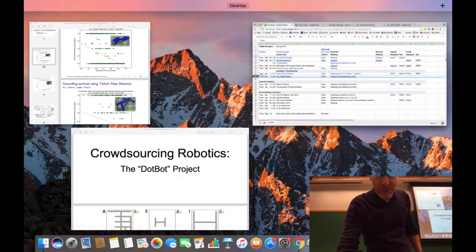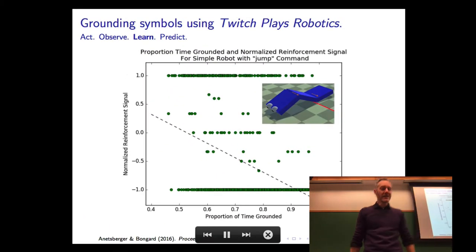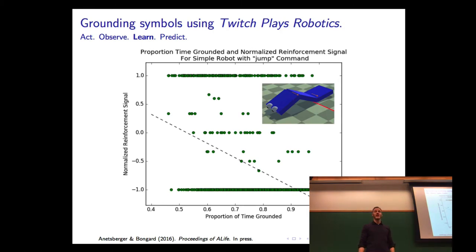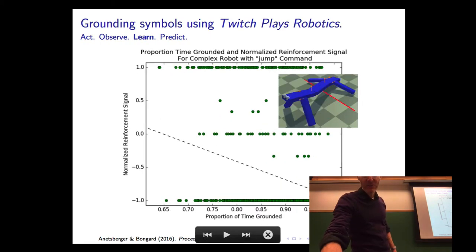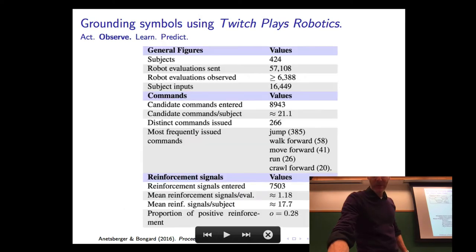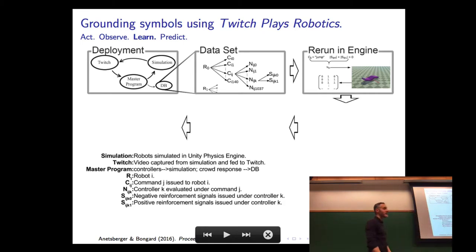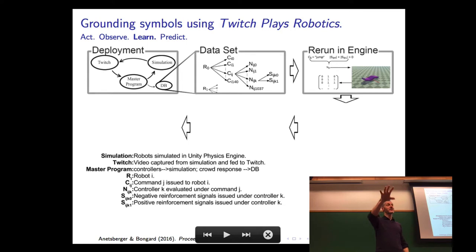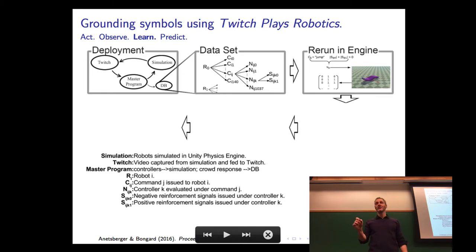Back to Twitch Plays Robotics. We ended last time by looking at some of the data generated by the crowd. We had two robots, and for each robot people could issue plain English commands. For each of the two robots, the crowd issued a large number of commands. Each command was in effect for three minutes, and during that period six controllers were evaluated under that command — giving us N_ijk, the kth controller evaluated under the jth command on the ith robot. For each controller N, we had the number of up votes (yeses) and the number of no votes (noes) from the crowd.